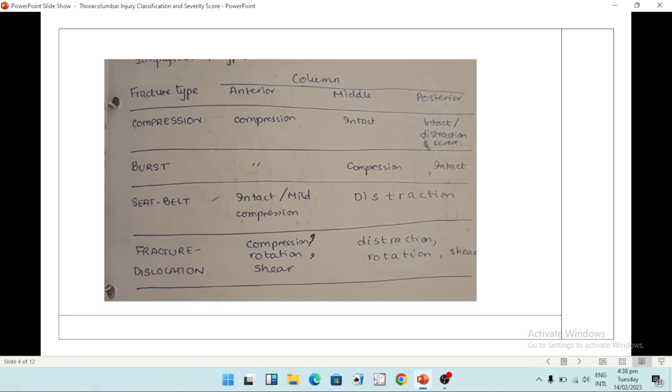Now we come to the McAfee classification, which has many types but we are going to describe it in four types because we are not going to go into the complex details. We are going for the simplified McAfee classification. The first type is the compression fracture in which the anterior column is compressed. In the burst fracture, there is compression in the anterior and middle columns. The posterior column is intact. In the seat belt type of fracture, there may be mild compression or it may be intact, but in the middle and posterior columns there is distraction. Then there is fracture dislocation in which all three columns are somehow or the other involved.